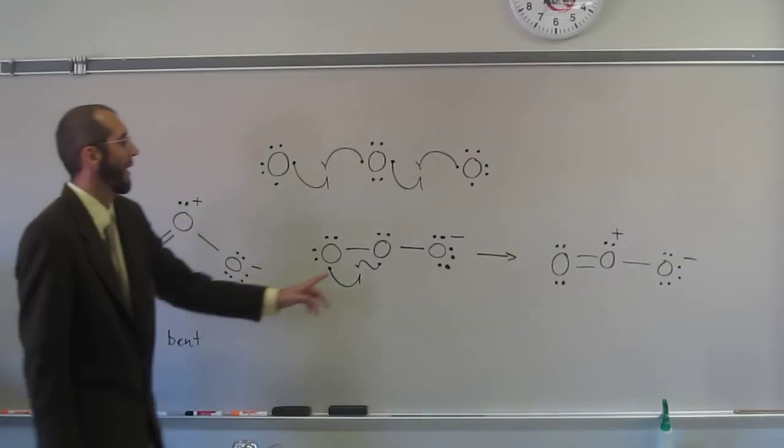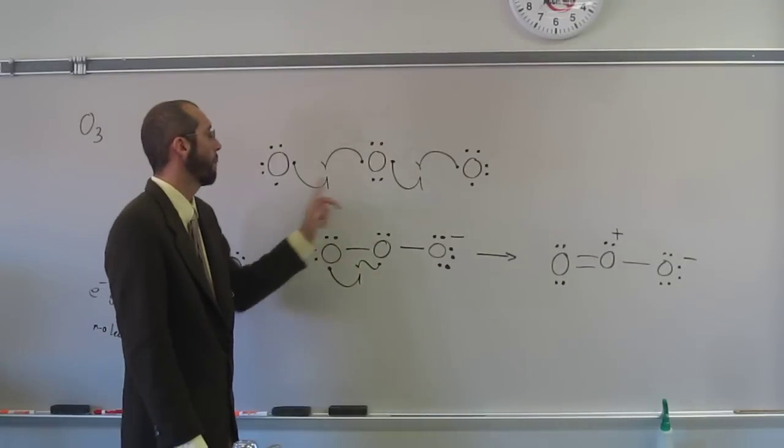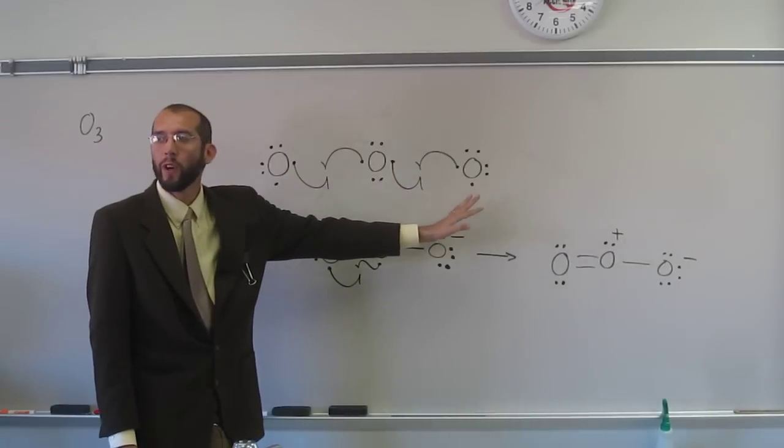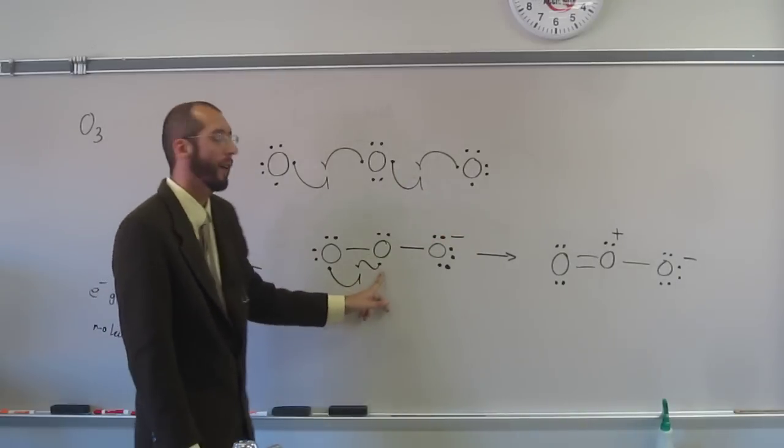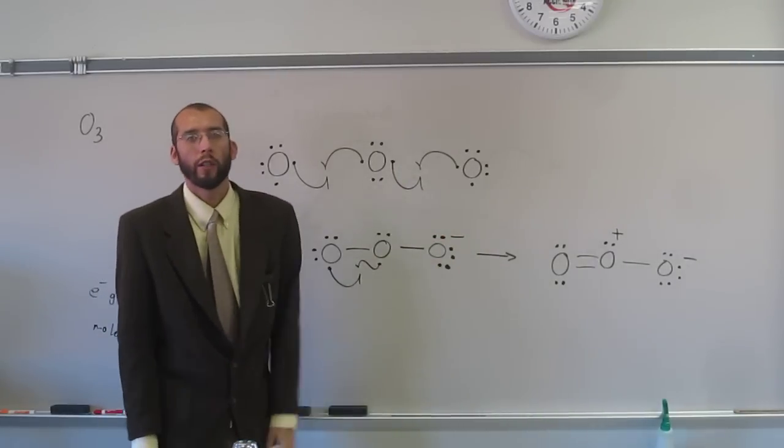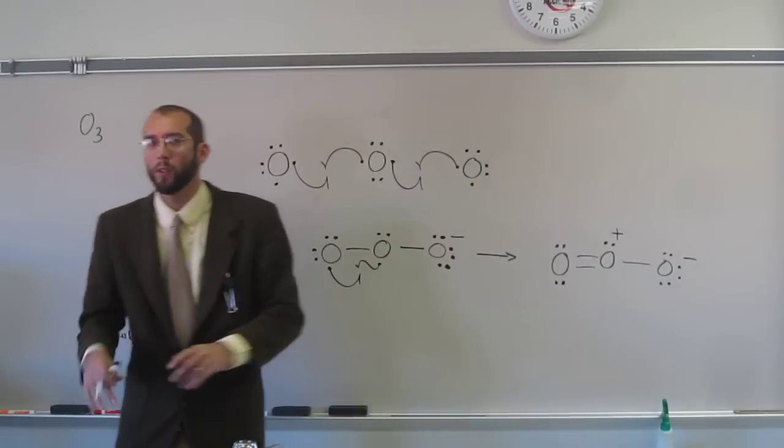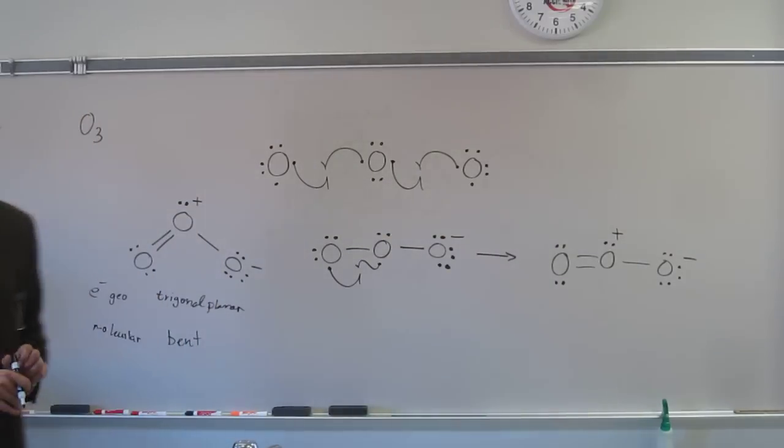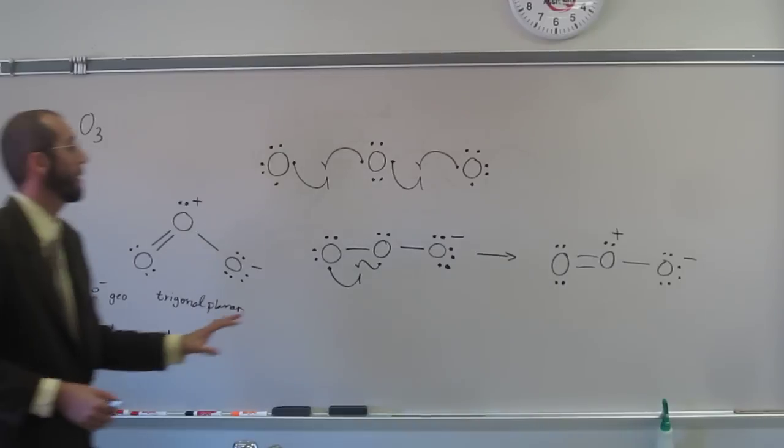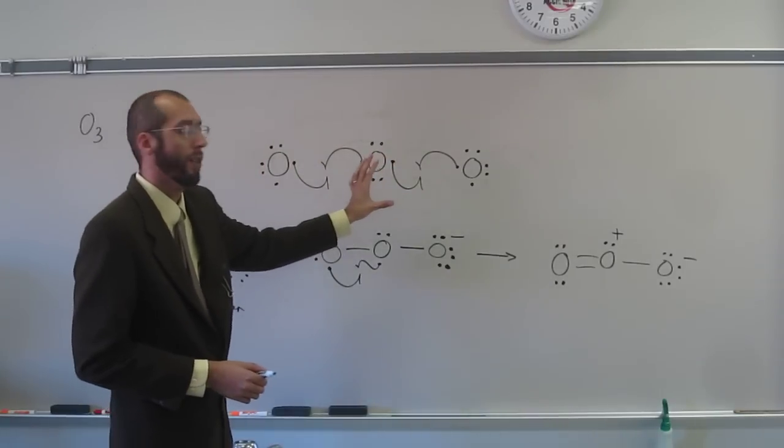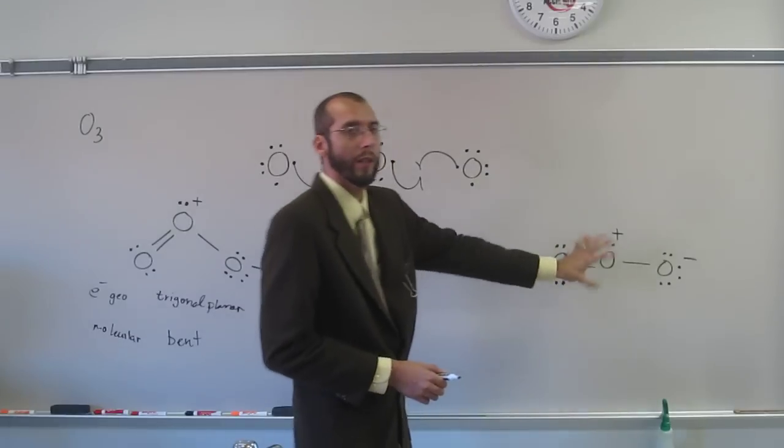So the thing is, you can put your Lewis structures together first and then realize, well, I have to switch an electron to this one. Or you can switch the electron first and then put your Lewis structures together, whichever one makes most sense to you. To me it makes more sense to just write out the Lewis structures and realize what's going on.